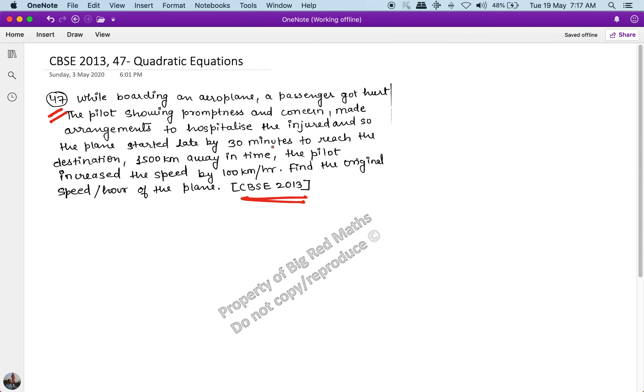And so the plane started late by 30 minutes. To reach the destination 1500 kilometers away in time, the pilot increased the speed by 100 kilometers per hour. Find the original speed per hour of the plane.